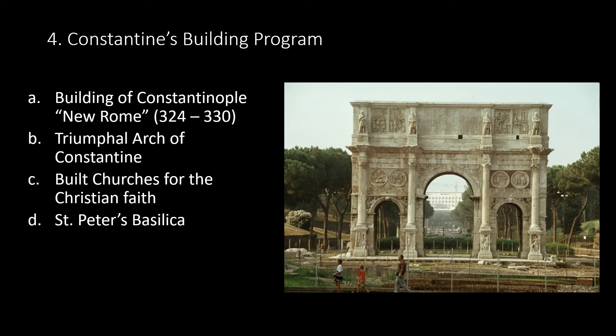Constantine's building program: Constantine would move the capital from Rome to Byzantium in 330. The new capital had four advantages: first, it was the crossroad for trade; second, it was easy to defend against attacks; third, it was very strongly Christian; and fourth, it was located in the most prosperous part of the empire — the east — which he renamed Constantinople. The triumphal arch of Constantine was built along with churches for the Christian faith — he was the first emperor to do so.